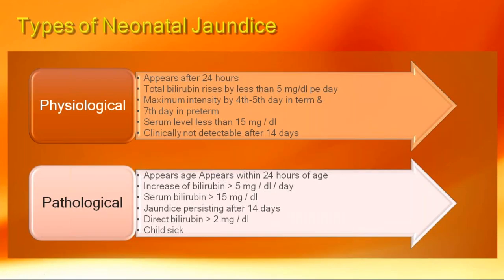There are two main types of neonatal jaundice: physiological and pathological — this is the most important distinction. Physiological jaundice appears after 24 hours, with total bilirubin rising less than 5 mg/dL/day. It peaks around day 4 or 5 in term babies, and up to day 7 in preterm. Serum levels never exceed 15 mg/dL total, and it is clinically not detectable after two weeks.